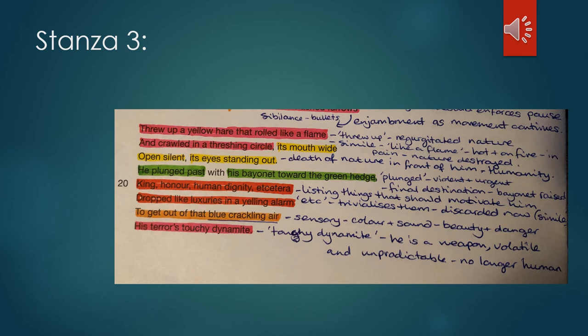Then we have line 20. This is what's going through his mind. So king, honour, human dignity, etcetera, dropped like luxuries in a yelling alarm. So we have the listing of the three things, king, honour, human dignity. These are things that should motivate him to keep going. You know, we're told that you fight for your king and your country, for your own honour, for your human dignity, for your pride. Then we have, after this listing of these three things, though, the word etc, which almost trivializes those things. He no longer is motivated by his king, by his honour, by his human dignity. They're now discarded because they're dropped like luxuries, which is a simile in a yelling alarm, as if they're just things that other human beings take for granted, that are unnecessary now. And it's like he's in full fight or flight mode and the humanity in him, the things that ordinarily would motivate him, have been thrown out now.